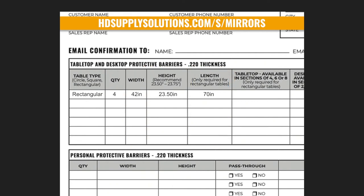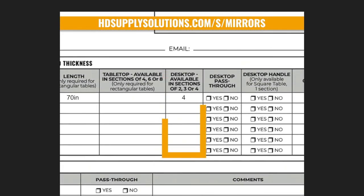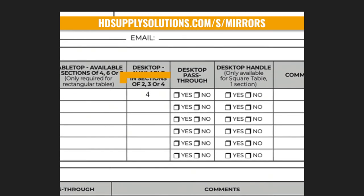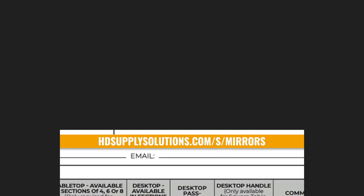If you're ordering a rectangular barrier, please indicate how many spaces you would like the barrier to have. This number represents the total number of chairs placed at the table. A square barrier has one section. A rectangular barrier can include two, three, or four sections.